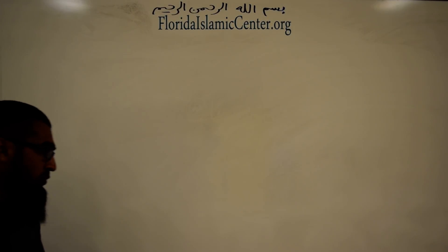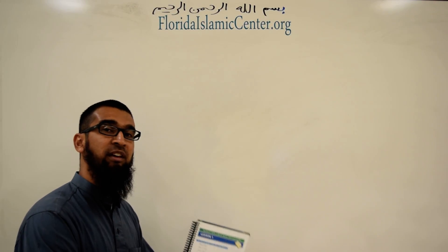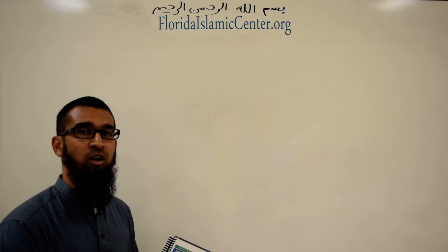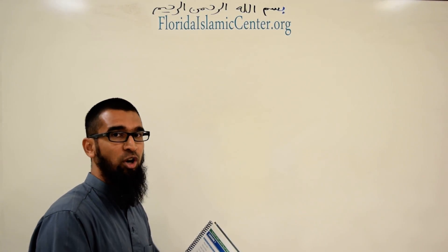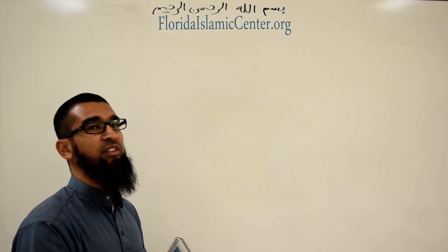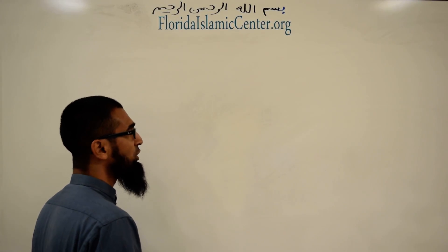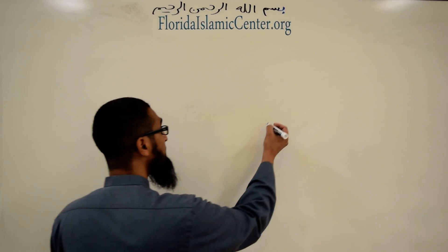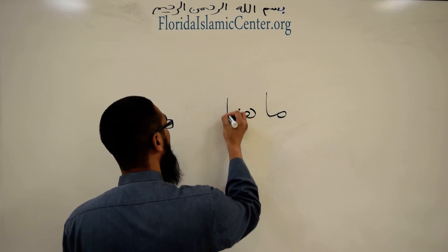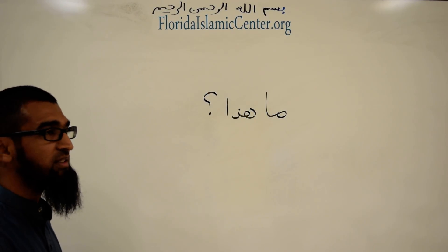So as we continue, if you see something and you want to ask 'What is this?' — you're curious, you don't know what it is. I told you, هذا كتاب, but you don't know what this thing is, you saw it for the first time. So how do you ask that? You would say: ما هذا — 'What is this?'